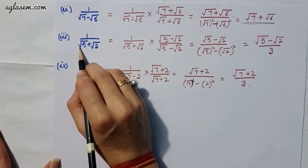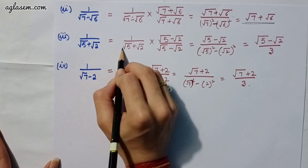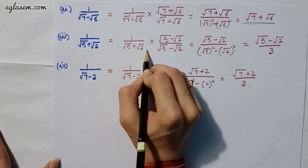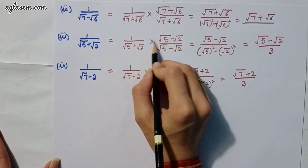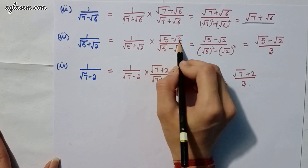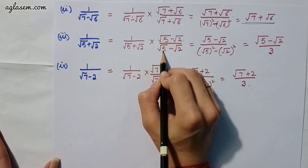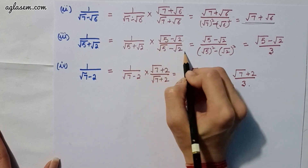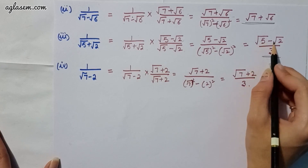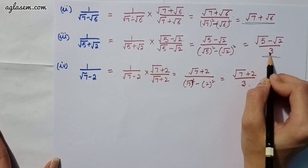Moving to our third part, which says 1 upon (root 5 plus root 2). That is 1 upon (root 5 plus root 2) multiplied by (root 5 minus root 2) divided by (root 5 minus root 2), which gives the answer root 5 minus root 2 divided by 3.